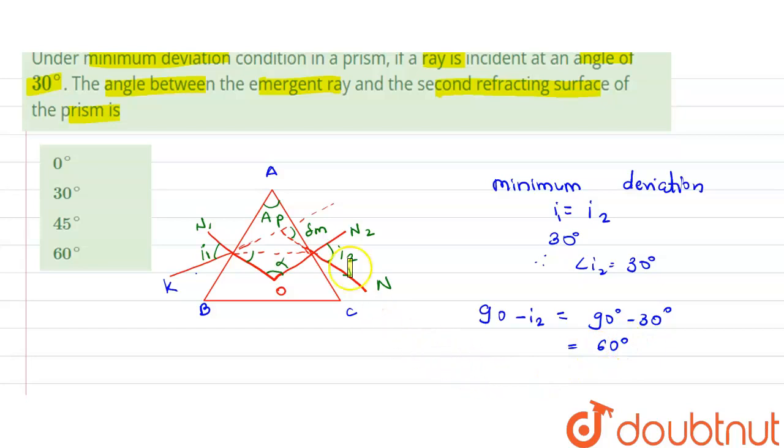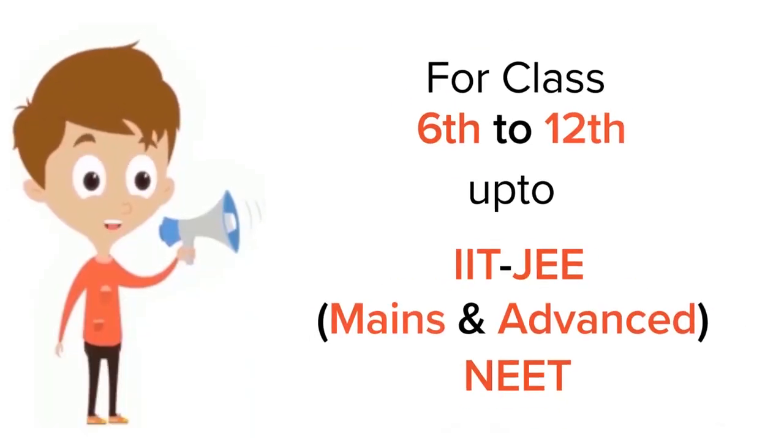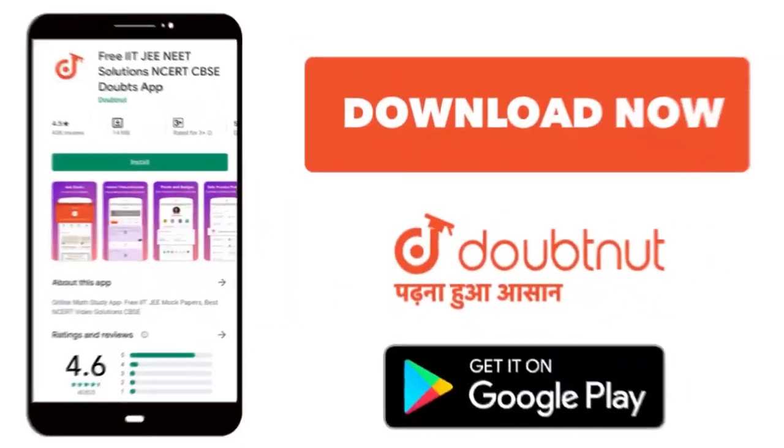So angle between the emergent ray and second refracting surface of the prism is 60 degrees. Thank you. For class 6 to 12 IIT-JEE and NEET level, trusted by more than 5 crore students. Download Doubtnet app today.